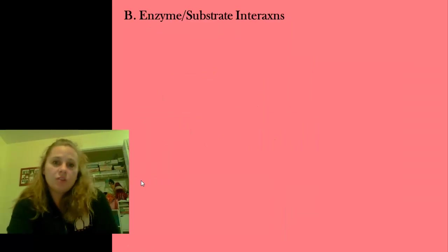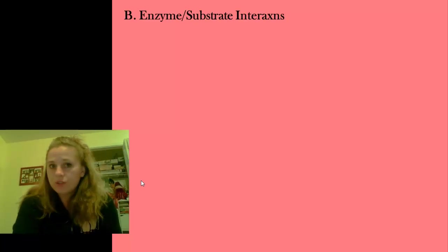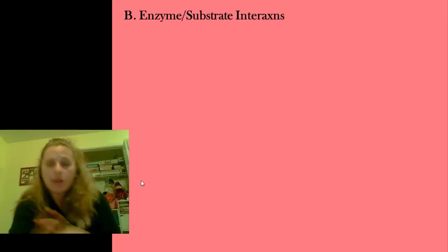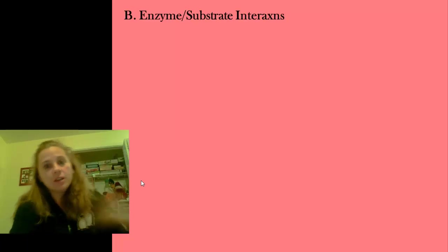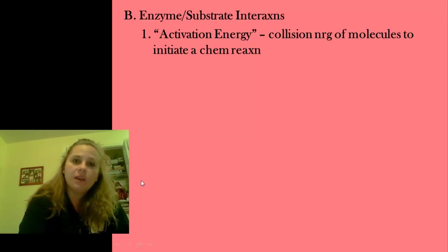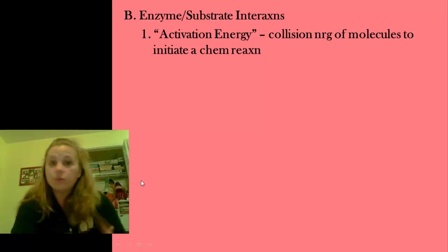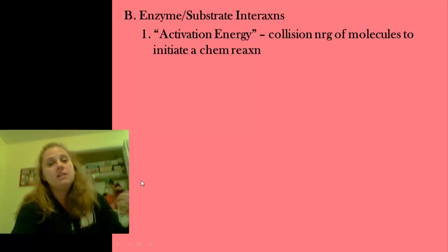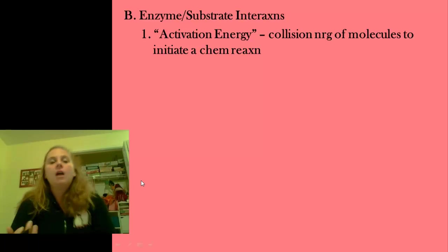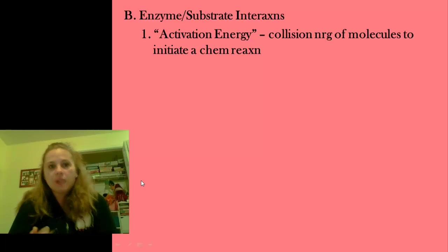The substrate that an enzyme works on — substrate is just another fancy word for reactants. A reactant is what goes into a reaction and you get the products out. The way an enzyme works to speed things up is that it basically makes it more likely for molecules to bump into each other. We need that collision energy — it needs to be a slamming event to make that reaction happen. That's what we call the activation energy.